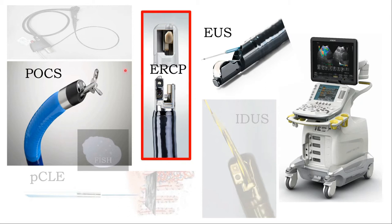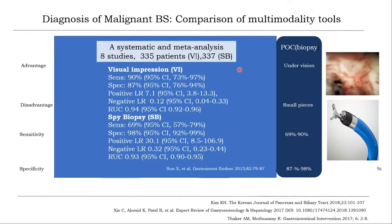I will talk about two devices: first, peroral cholangioscopy, and second, endoscopic ultrasound. You can see that peroral cholangioscopy with SpyGlass DS in a systematic and meta-analysis study of more than 300 patients shows visual impression from the image can achieve 90 percent sensitivity. It can also provide visual-guided biopsy with sensitivity up to 70 percent and specificity 98 percent.